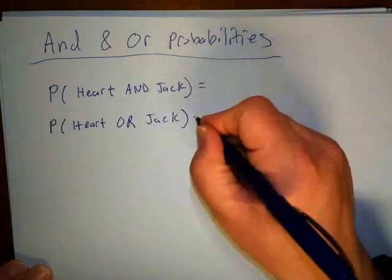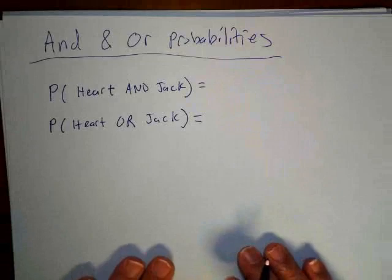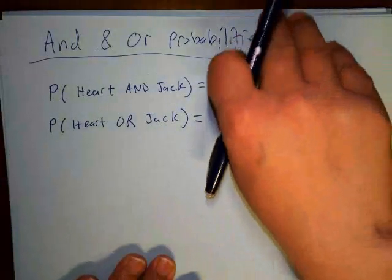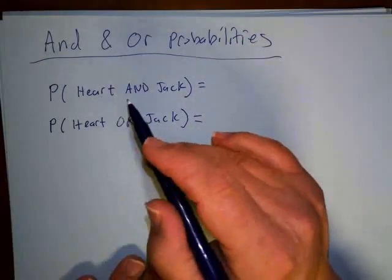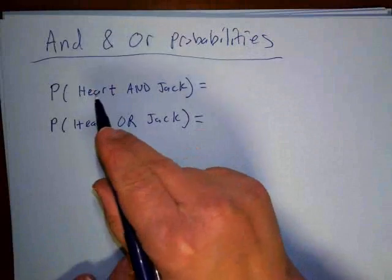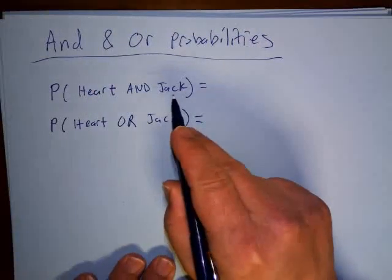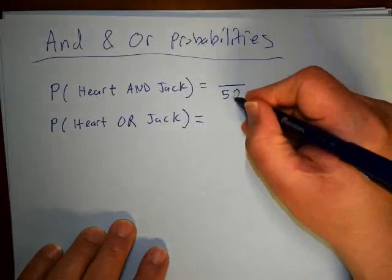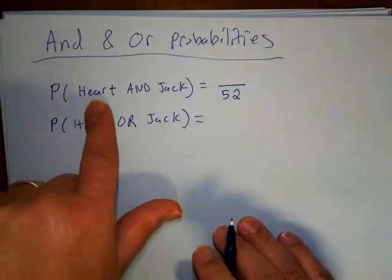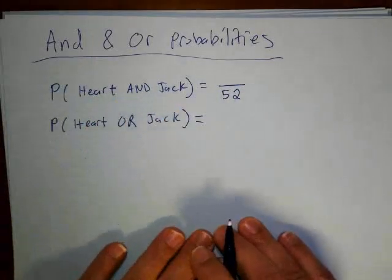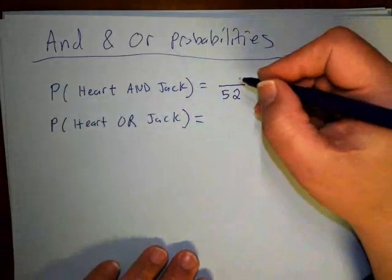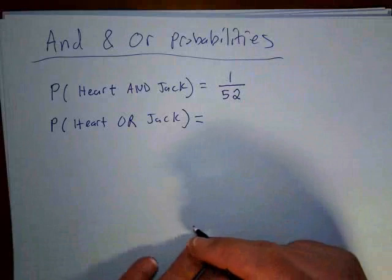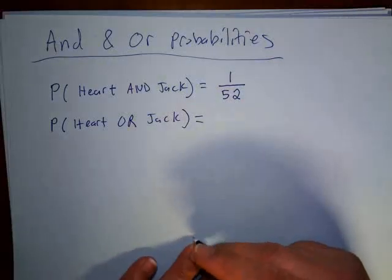These are two different probabilities. The AND probability means that one card must be both a heart and a jack at the same time. Out of 52 cards, there is only one card that is both — the jack of hearts. So the probability is 1 out of 52.